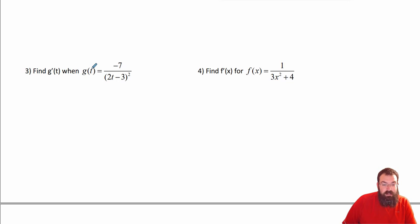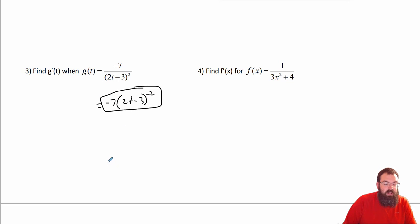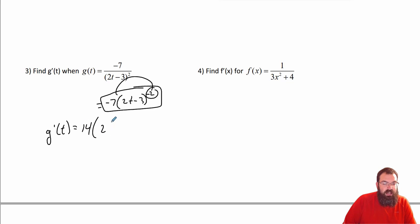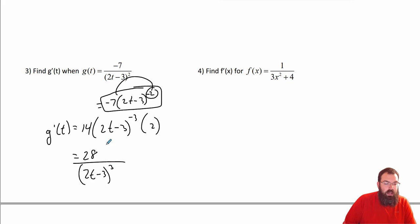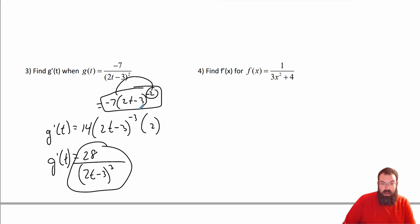Find the derivative of g with that formula. This is really the same as negative 7 times (2t − 3) to the negative 2. So g prime of t: bring down the negative 2, that's positive 14 times the inside stays the same, this goes to the negative 3rd, and then multiply by 2. So the answer is 28 over (2t − 3)³. Or you can leave it as to the negative 3 — that's fine.